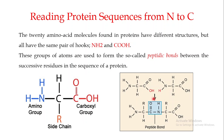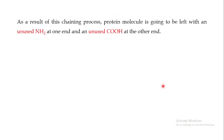Looking at one of these amino acids, the carboxyl group of one is used and the amino group of the other is used. When two amino acids combine, the carboxyl group of one amino acid joins with the amino group of the other. As a result of this chaining process, the protein molecule is left with an unused amino terminal at one end and an unused carboxyl group at the other end.